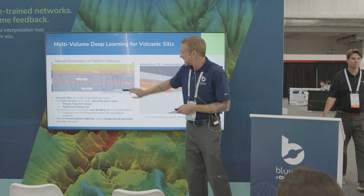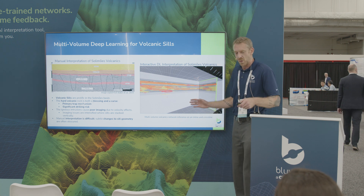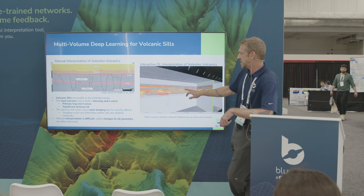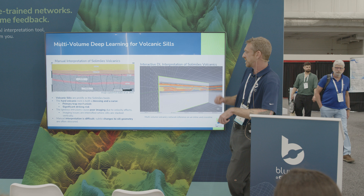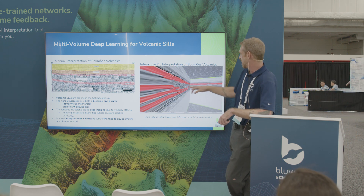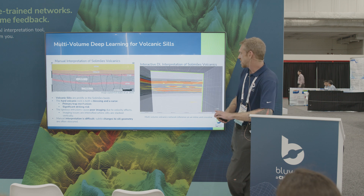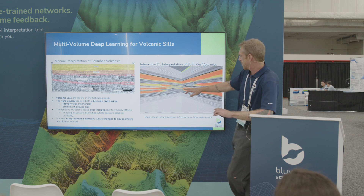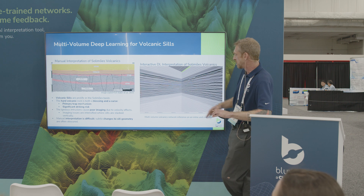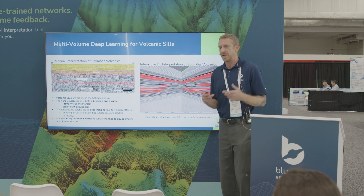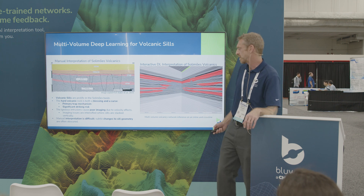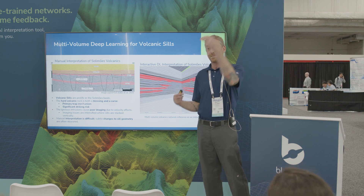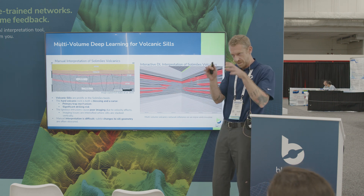Comparing the manual interpretation to what Interactive AI can do: in this video, the yellow is inference from the single-volume network trained only on amplitudes, and the red or orange is the multi-volume results. The multi-volume training gives us a lot more detail — it's breaking apart different sills at different levels. These subtle changes to sill geometry count, especially in an area where a half cycle is 15 meters.